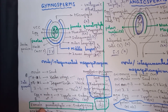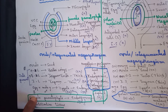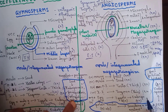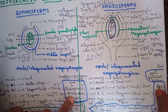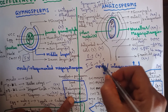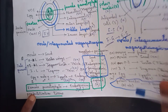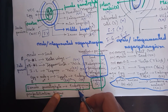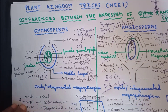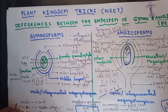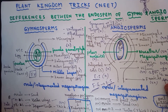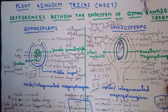In summary: endosperm is formed before fertilization in gymnosperms, represents the female gametophyte, and is haploid. In angiosperms, endosperm is developed after fertilization and is a post-fertilization tissue, which is triploid. In angiosperms, the female gametophyte is represented by the embryo sac, whereas in gymnosperms, the female gametophyte is represented by the endosperm. This concludes the overview of the ovule of gymnosperms and angiosperms.